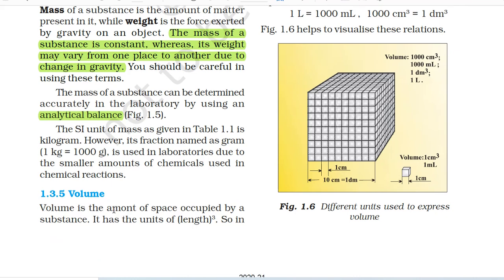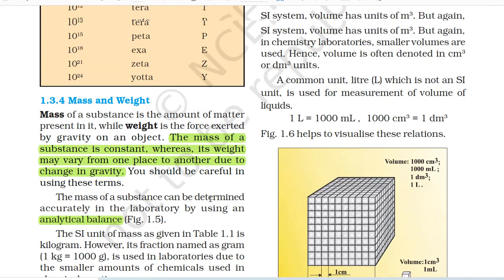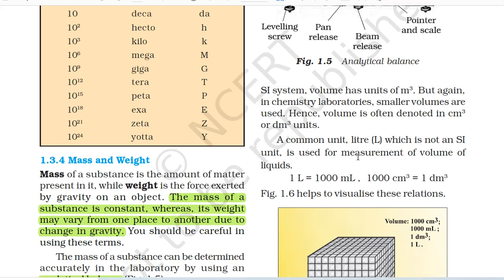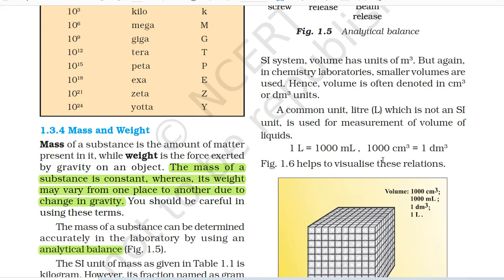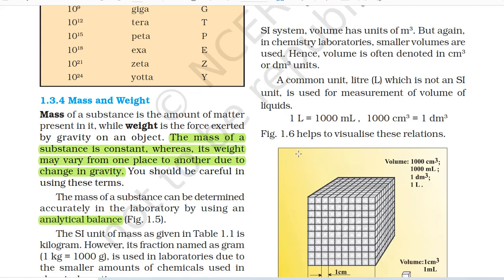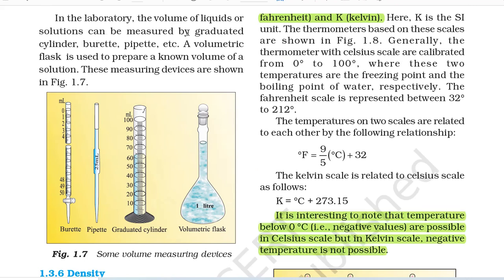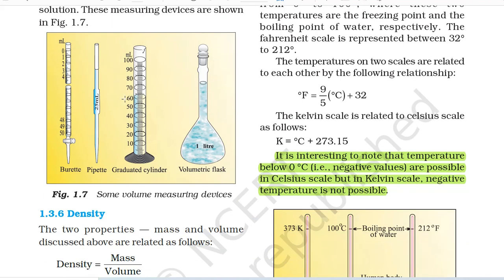1.3.5 Volume. Volume is the amount of space occupied by a substance. It has the units of length cubed. In the SI system, volume has units of m³, but in chemistry laboratories smaller volumes are used. Hence, volume is often denoted in cm³ or dm³ units. A common unit, litre (not an SI unit), is used for measurement of volume of liquids. 1 litre equals 1000 ml, and 1000 cm³ equals 1 dm³. In the laboratory, the volume of liquids or solutions can be measured by graduated cylinder, burette, pipette, etc. A volumetric flask is used to prepare a known volume of a solution.